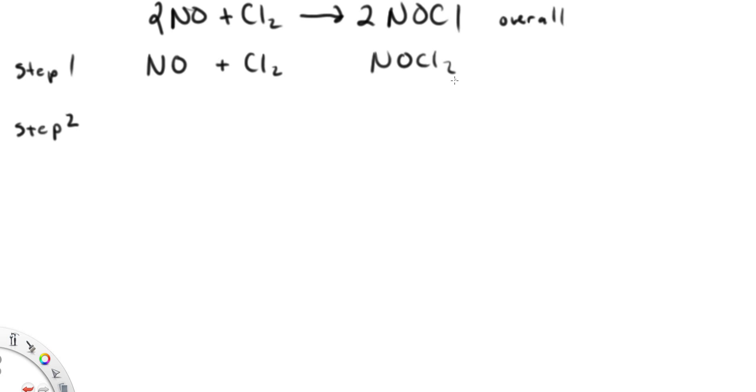I took away the arrow for a reason. And then we have our NOCl2 in our second reaction plus NO produces 2 NOCl, and that's step two.